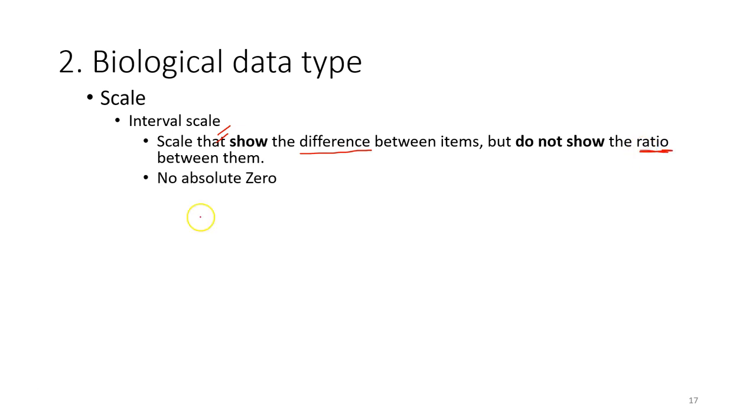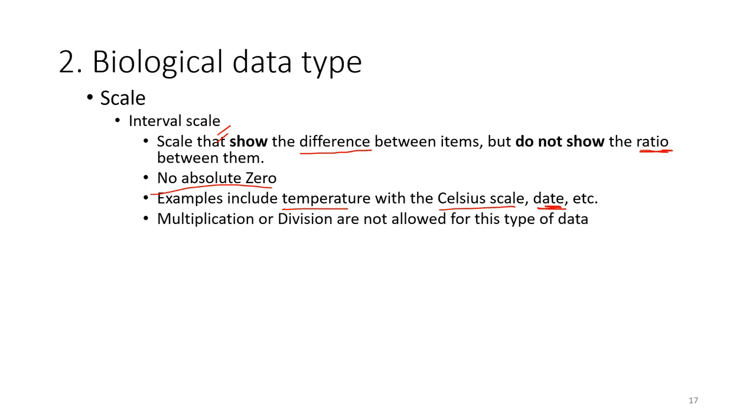The reason is that they don't have an absolute zero. There are a few examples, for example the temperature measured in the Celsius scale, the date. These are the interval scales that don't have an absolute zero and they do not show the ratio between them. In this case, the multiplications and divisions are not allowed for this type of data. For example, you cannot multiply the degree, so 2 times 2 degrees equals 4 degrees, which is not correct.